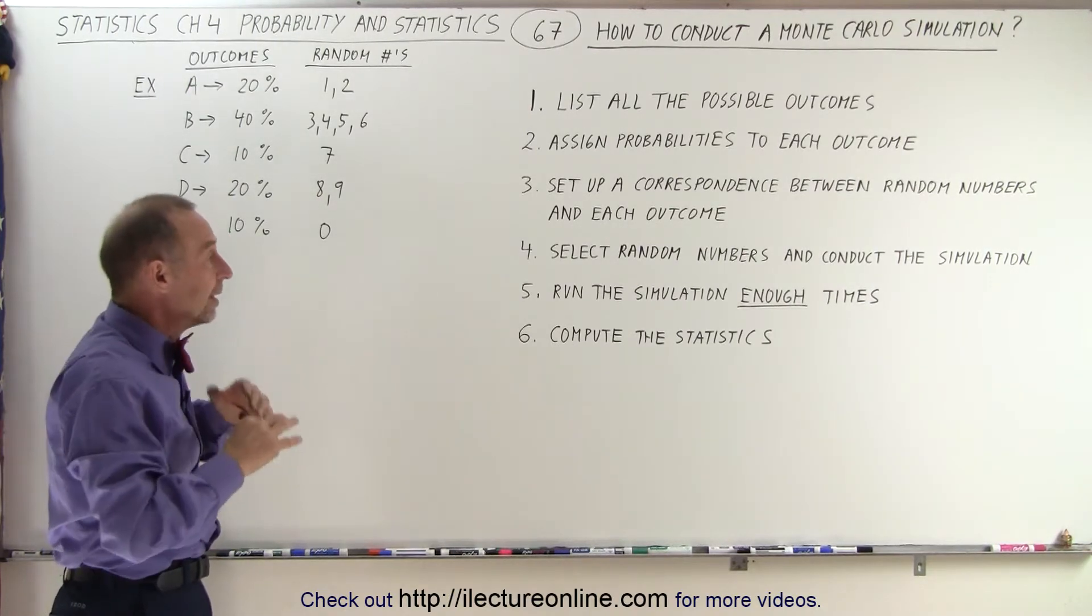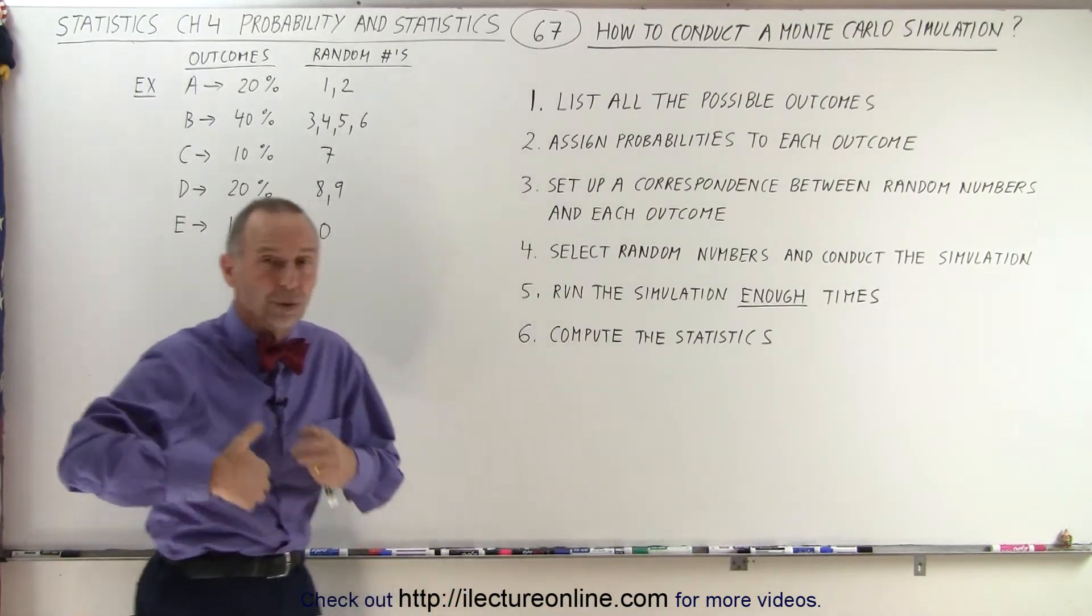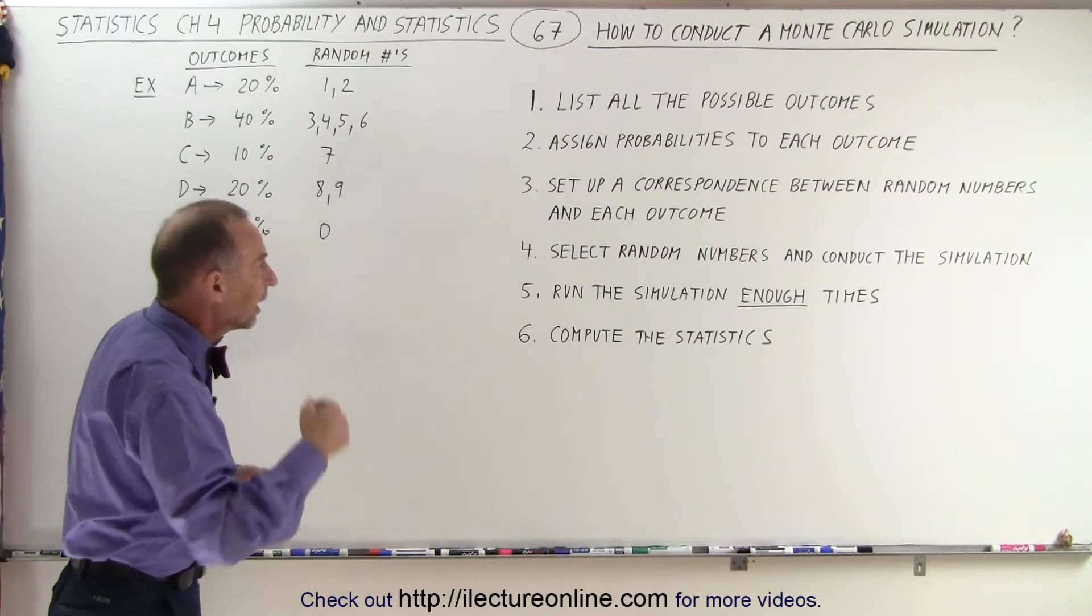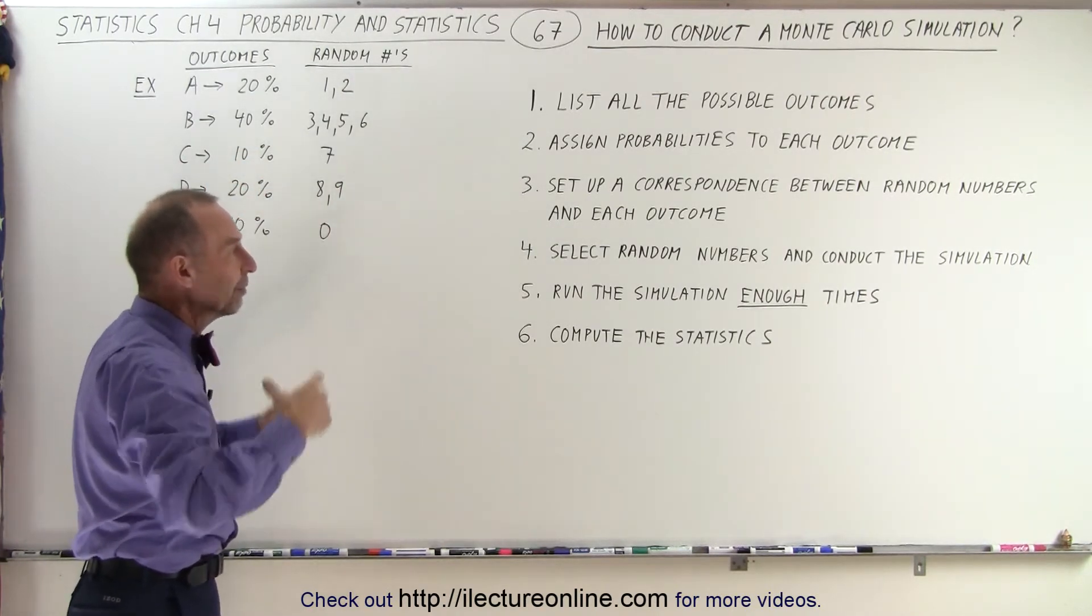Once you've done that, now you're ready to run the simulation. So then we're going to select random numbers. We're going to run a random number generator, and each time we have a number, we'll assign it to one of the outcomes and then see how that develops.